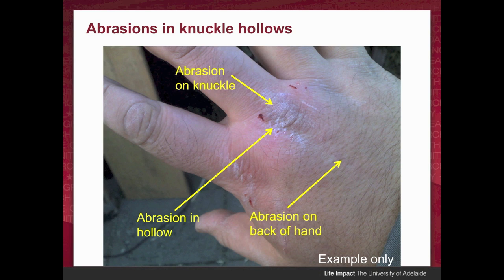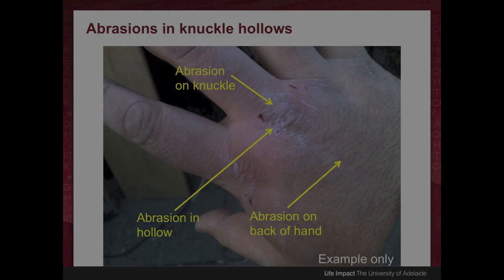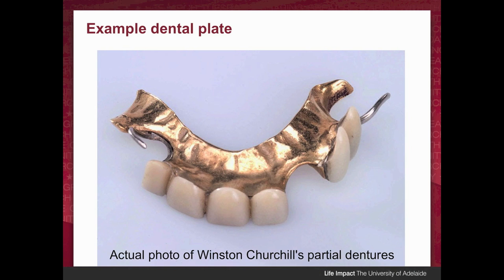He had abrasions between the knuckles only, not on top. It was reported that his back teeth were missing, and yet he didn't have a dental plate. He had a nice athletic physique — broad shoulders going down to a narrow waist, a very strong man — so he must have had some sort of dental plate; otherwise how would he chew his food with no back teeth? This is just an example of Winston Churchill's partial dentures; the Somerton man's would have looked somewhat different.